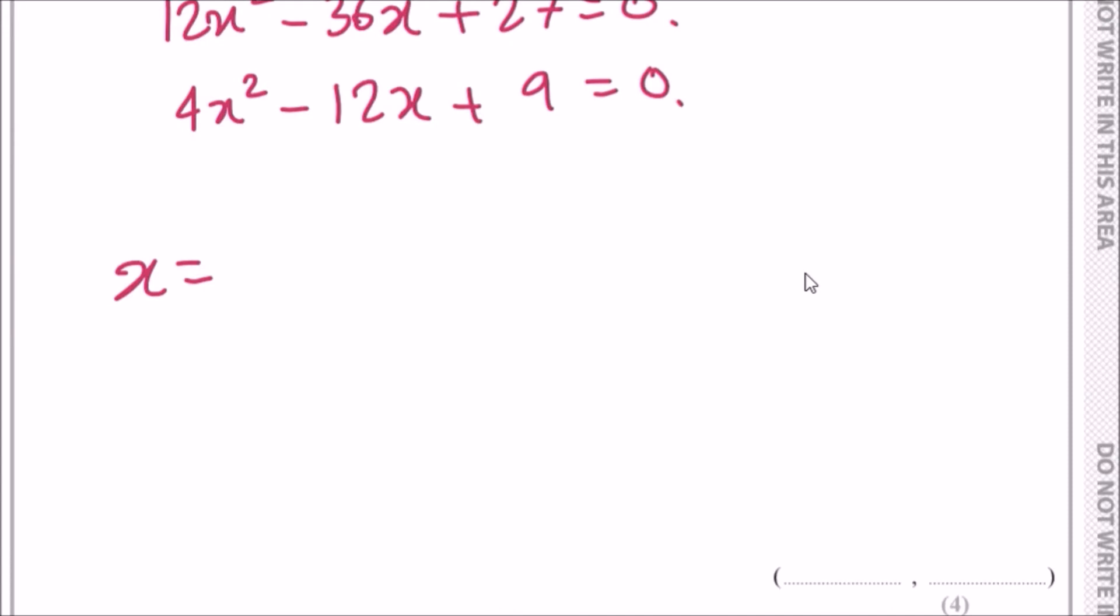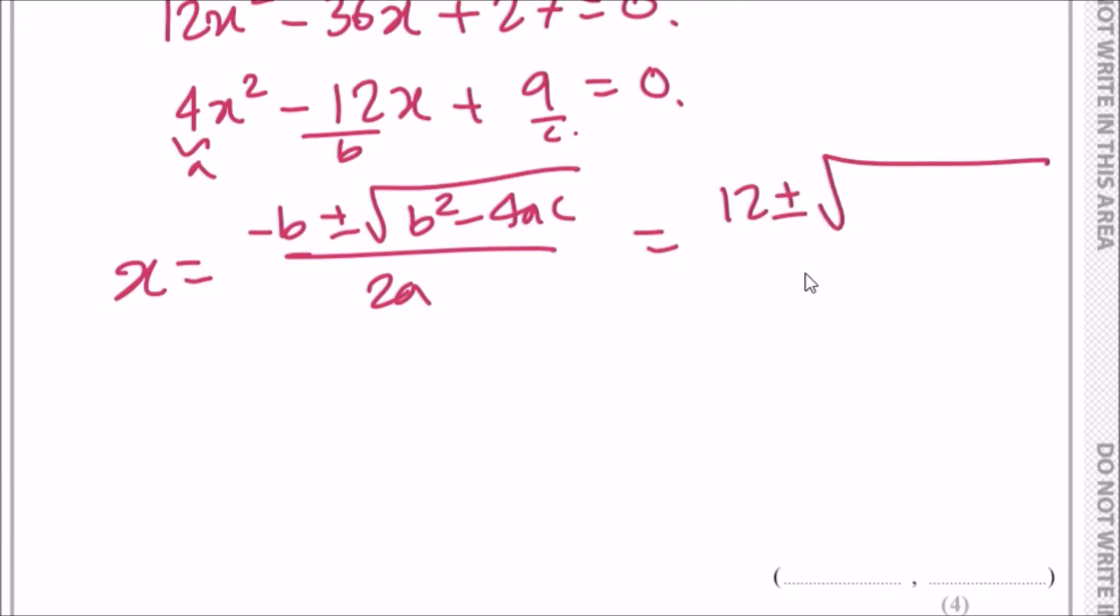It's going to be -b ± √(b² - 4ac) over 2a, where these values are a, b, and c. This means we've got -b, so b is -(-12), which will be +12, ± √((-12)² is 144 minus 4 times a, which is 4, times c, which is 9).